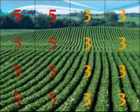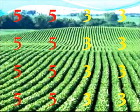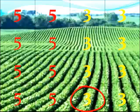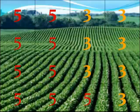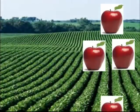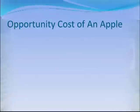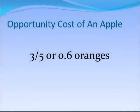Let's look at our farm. We have a 16-acre farm — each square represents one acre, the red are apples and the orange are oranges. In every acre planted with apple trees we got five bushels of apples; in every acre with orange trees, three bushels of oranges. If we take one acre of oranges and switch it to apple trees, we gave up three oranges and got five more apples. So the opportunity cost of an apple is three over five, or 0.6 oranges.